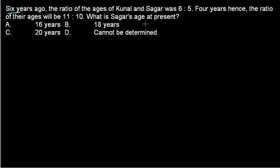What is Sagar's age at present? So obviously we need to assume the age of Sagar or Kunal in this case. So let's assume them, because we get the ratio. Once you get the ratio, the assumption becomes a little bit easier. So we always assume age to be X.